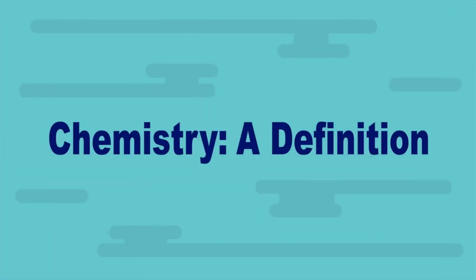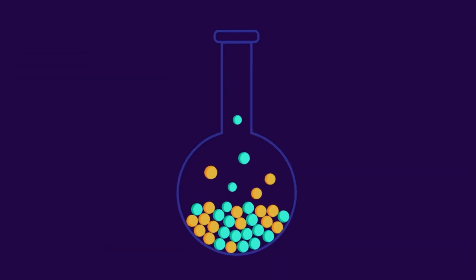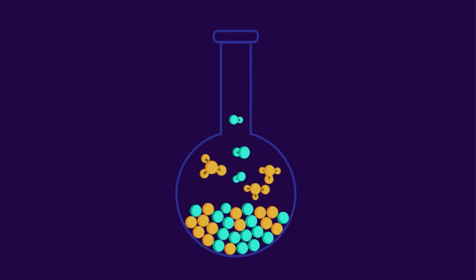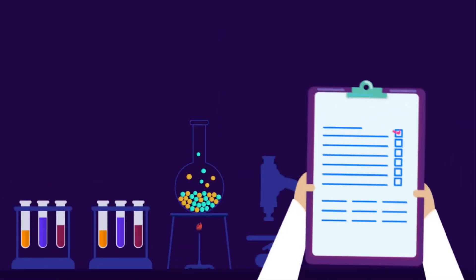A definition of chemistry: the study of matter, including its composition, characteristics, and structure, as well as how it changes and interacts with energy. This is a straightforward definition that sums up what is actually a complicated and intriguing subject.